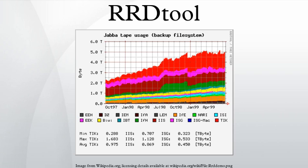General Data Storage: RRTool assumes time variable data in intervals of a certain length. This interval, usually named step, is specified upon creation of an RRD file and cannot be changed afterwards. Because data may not always be available at just the right time, RRTool will automatically interpolate any submitted data to fit its internal time steps. The value for a specific step that has been interpolated is named a primary data point.